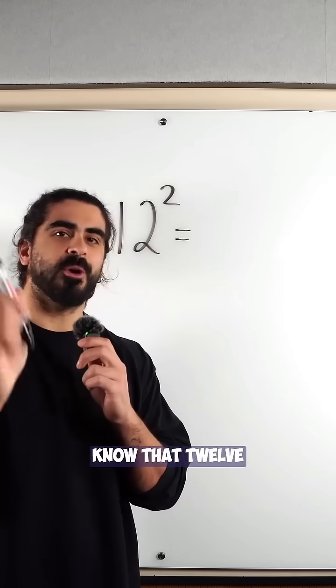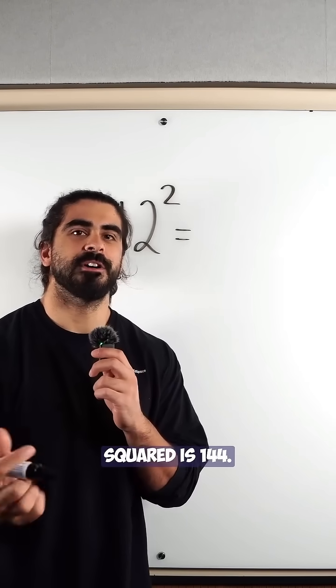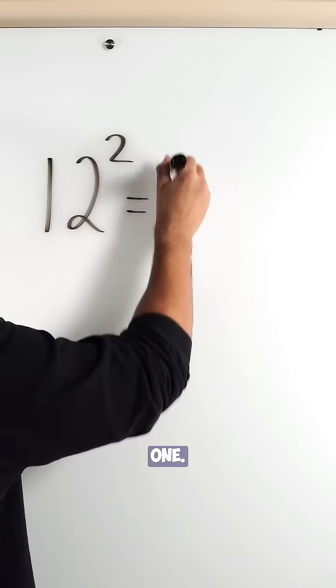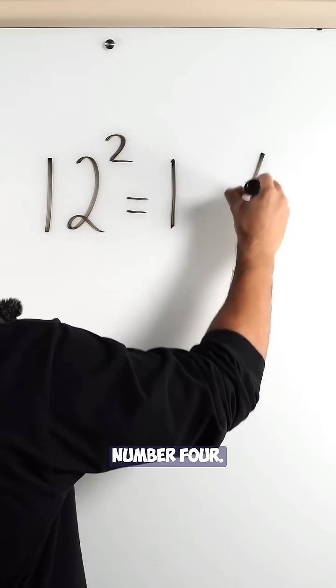Now we all know that 12 squared is 144, but let me show you this trick. You square the first number, 1. You square this number, 4.